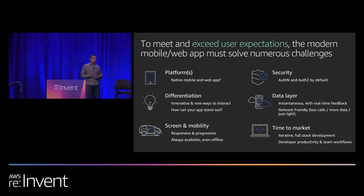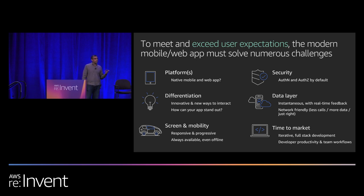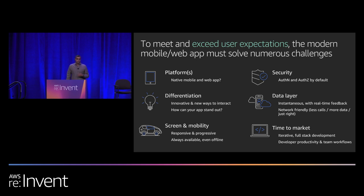The fifth bucket is the data layer — the glue between your app and the cloud — where the key concern is that it's instantaneous, supports real-time and asynchronous experiences, and is respectful of the device's constraints on bandwidth, battery, and CPU. The final bucket is time to market: how can I set up an iterative development workflow that acknowledges my organizational structure? Increasingly, building a mobile app means doing front-end and back-end together, and we hear this most around GraphQL, where front-end teams own the integration layer between the app and the cloud.